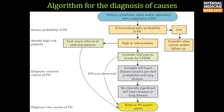The diagnostic algorithm: if history, symptoms, signs, and/or laboratory tests are suggestive of pulmonary hypertension, assess echocardiographic probability. If probability is low, consider other causes and/or follow-up. If probability is high or intermediate, identify high-risk patients and fast-track referral to expert centers. Otherwise, consider VQ scan to screen for CTEPH. If VQ scan is abnormal, refer to a pulmonary hypertension expert center. Otherwise, consider left heart disease and lung disease; if neither is clinically significant, refer to expert center.